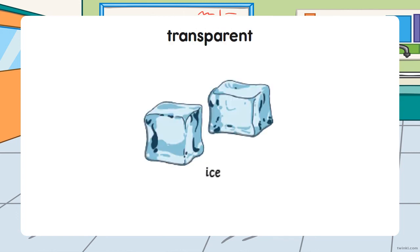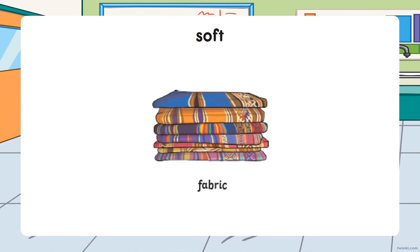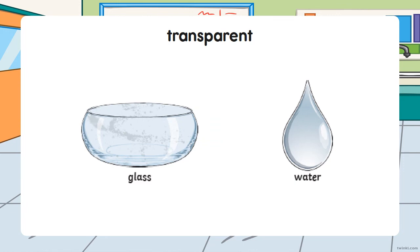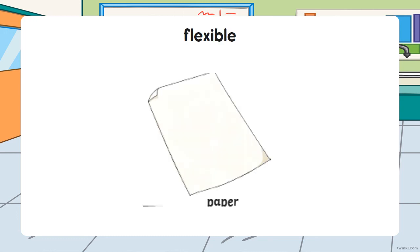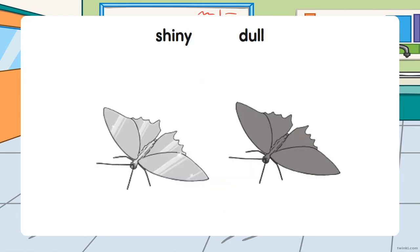Cotton is soft. Ice is transparent — we can look through it. Fabric can be folded and is soft. A glass and water drops are also transparent — we can see through them. Paper can be folded, so it is flexible. A butterfly can be shiny or dull. Those are properties of matter.